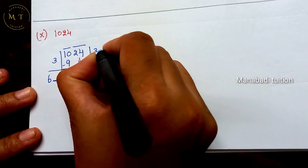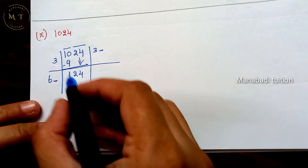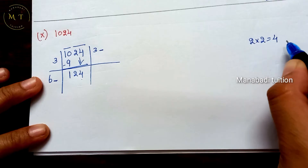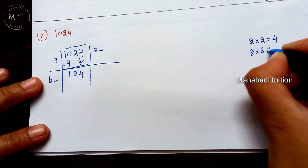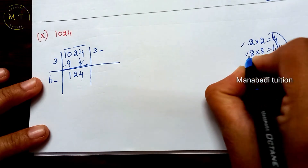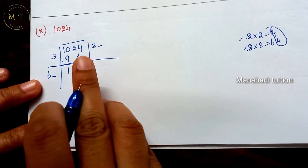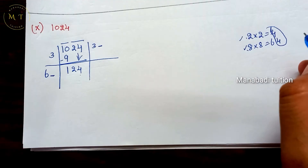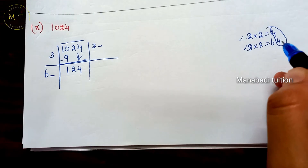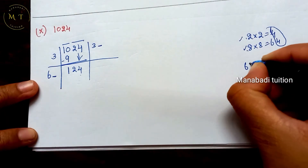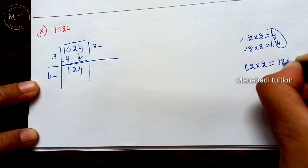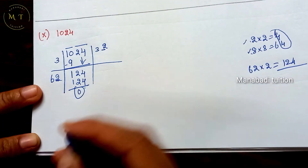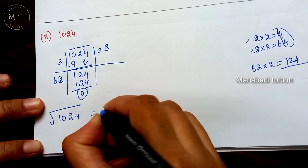Okay? So here we have two numbers. Checking out. So 1024's square root value is 32.